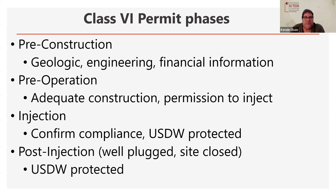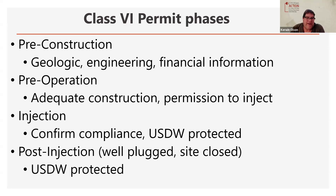There are four phases to the permitting process for the Class 6 permit. The application gets submitted. There's a pre-construction review where the EPA and other folks look at the geological and hydrogeological information, engineering information, and financial information related to the wherewithal of whatever company is filing the application. Then there are pre-operation permits where they evaluate the construction of the well sites, making sure they're adequate to seal in and not leak. That is when they would receive permission to inject once the pre-operation analysis has been done — and that has not occurred yet with Wabash Valley.